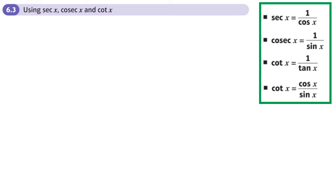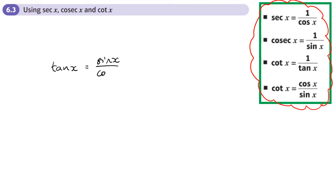This is section 6.3 of chapter 6 on trig functions. We want to be able to use sec, cosec and cot to solve simple equations, prove identities, and simplify expressions. As long as we remember the relationships between them it shouldn't be a problem. Remember from year one that tan is sine over cos, so the reciprocal — cotangent — is cos over sine.